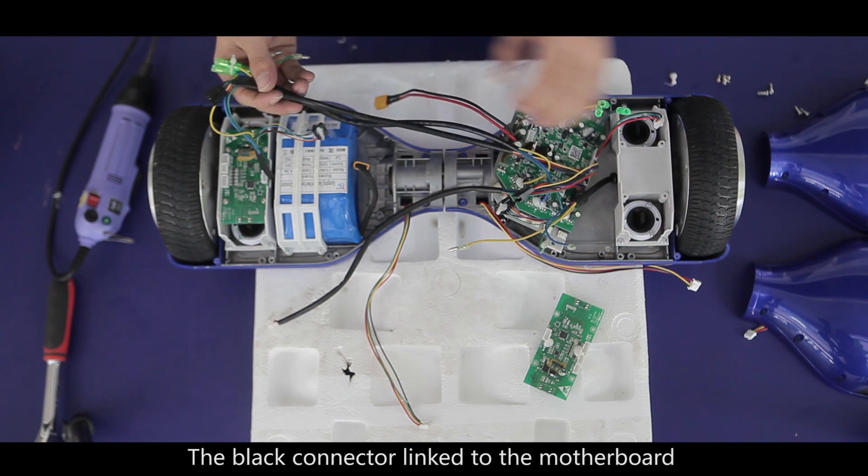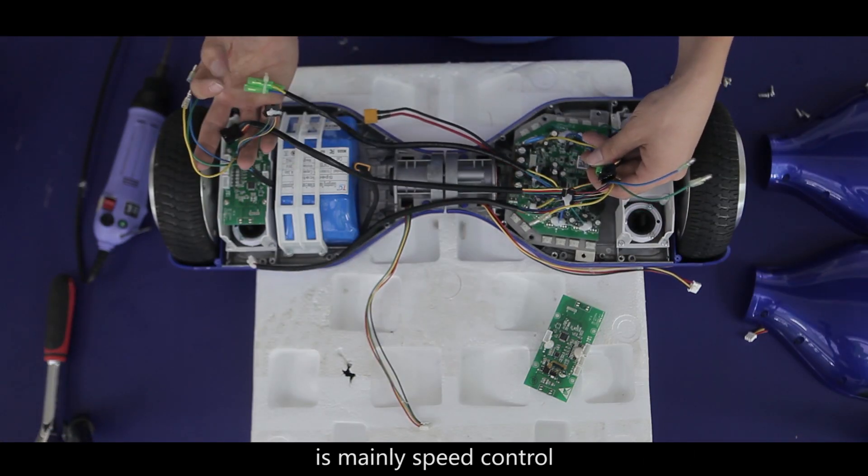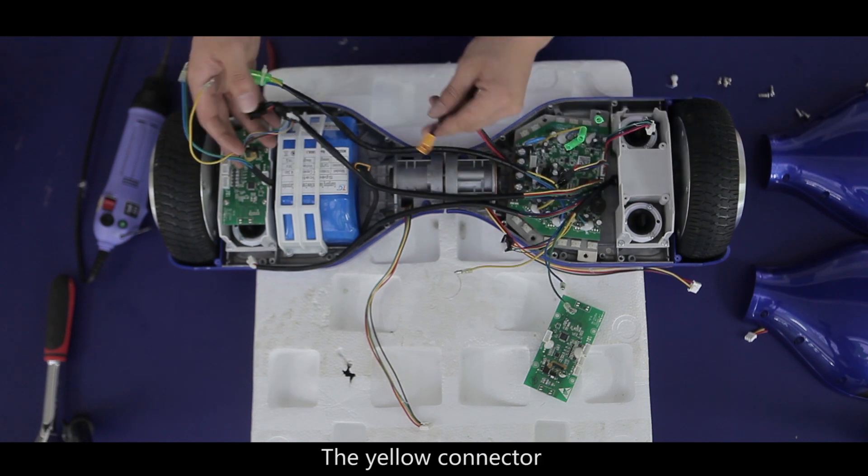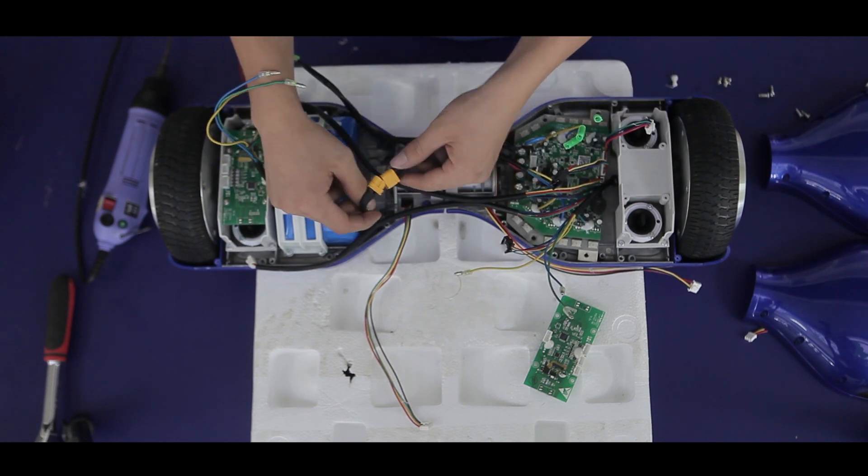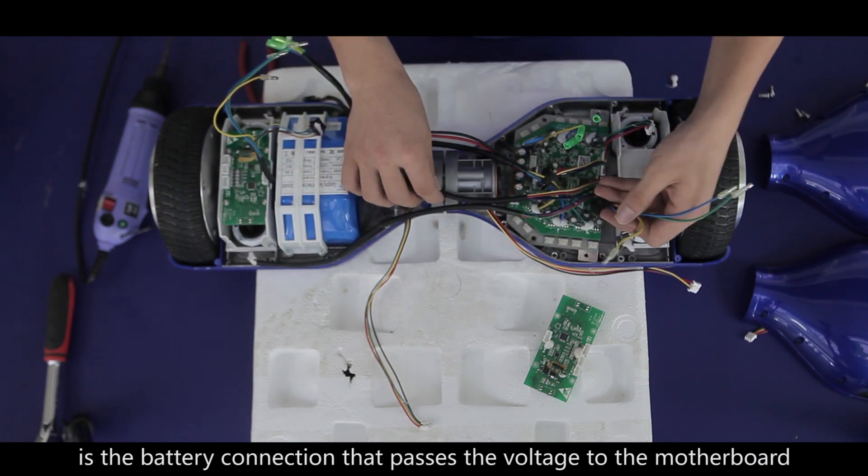The black connector linked to the motherboard is the wire connection to give instructions to the motor, mainly speed control. The yellow connector on the left of the motherboard is the battery connection that passes the voltage to the motherboard.